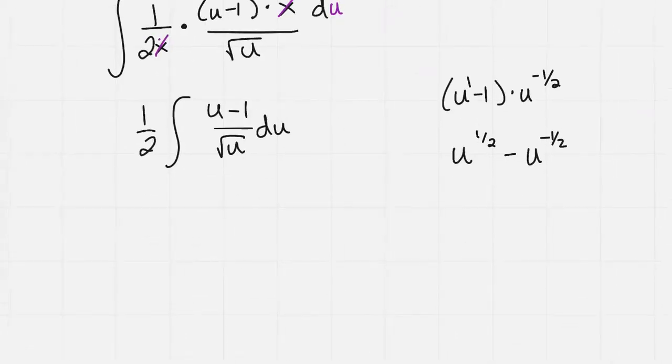So I now have the integral of 1 half, and I'm going to separate out the integrals: integral of u to the 1 half du, minus the integral of u to the negative 1 half du.